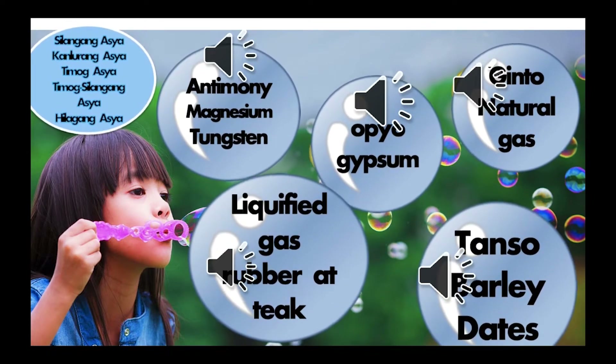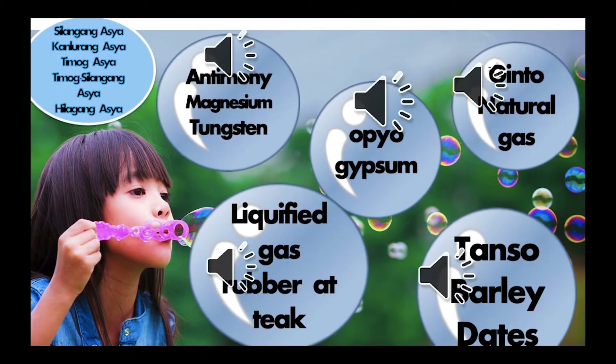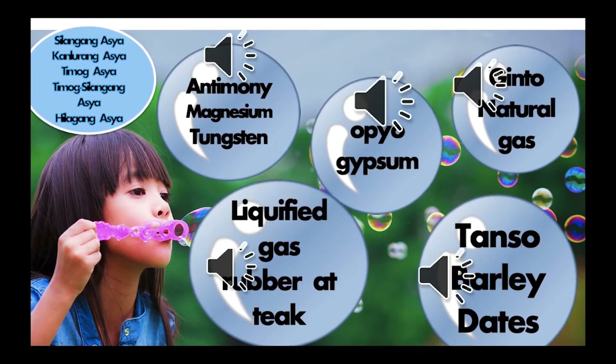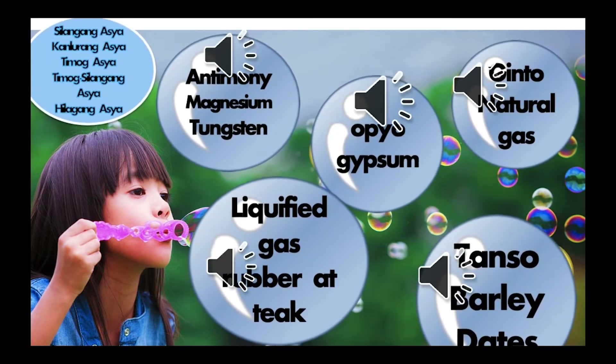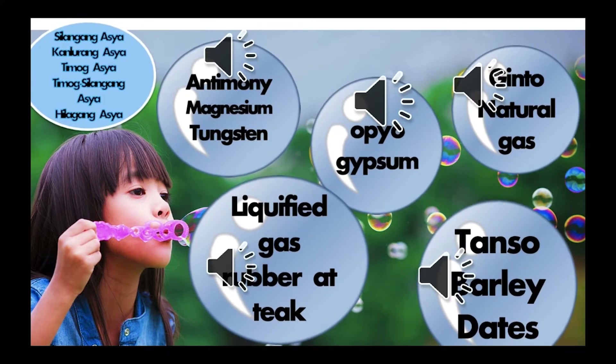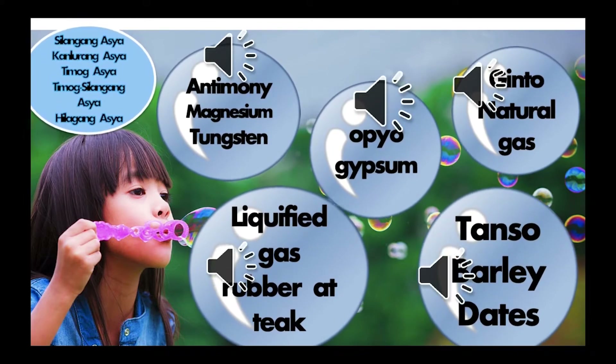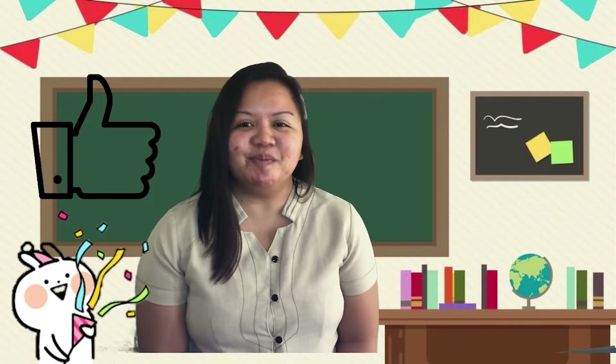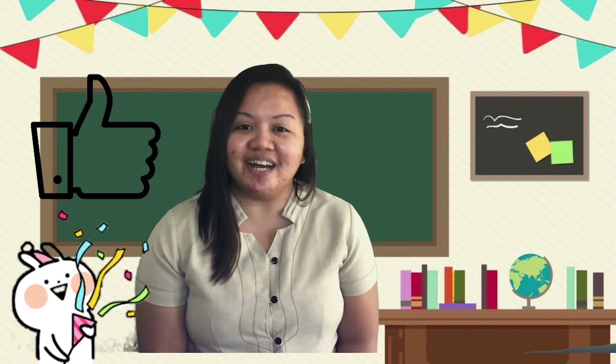Kung ang nabili mong lobo ay tanso, barley, at dates, at ang sagot mo ay kanlurang Asia — tama ka! Mahusay, nasagot mong lahat ang mga katanungan. Talagang pinag-aralan mong maigi ang ating nakaraang aralin. Kaya naman, tayo na't simulan ang ating aralin.